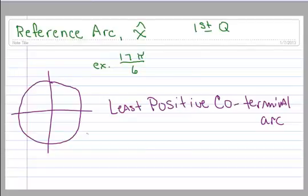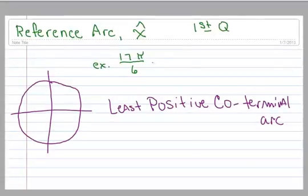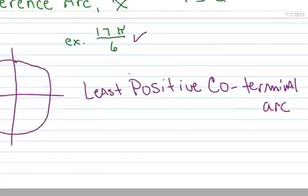This is the same example that we just did where we talked about reference arc. You kind of find the least positive coterminal arc first on your way to finding the reference arc, so let's just go through that again.